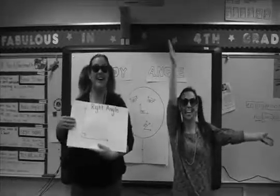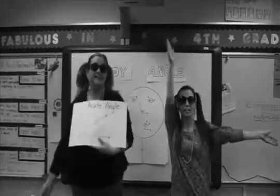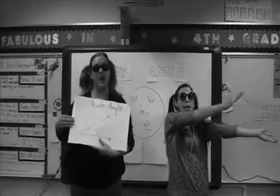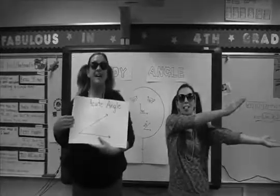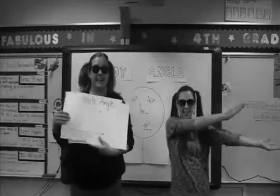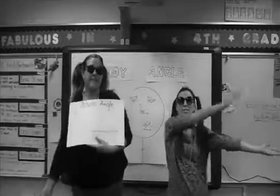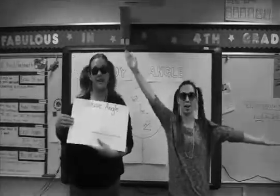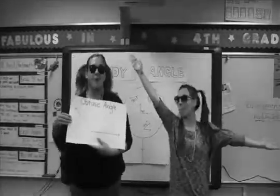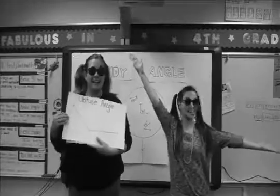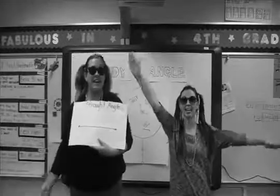Right angle — it is 90 degrees. We say acute angle: less than 90 degrees. We say obtuse angle: more than 90 degrees.